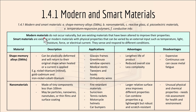Modern Materials do not occur naturally but are existing materials that have been altered to improve their properties. Smart Materials are existing or modern materials with physical properties that can be varied by an external input such as temperature, light, moisture, force or electrical current. They sense and respond to different conditions.